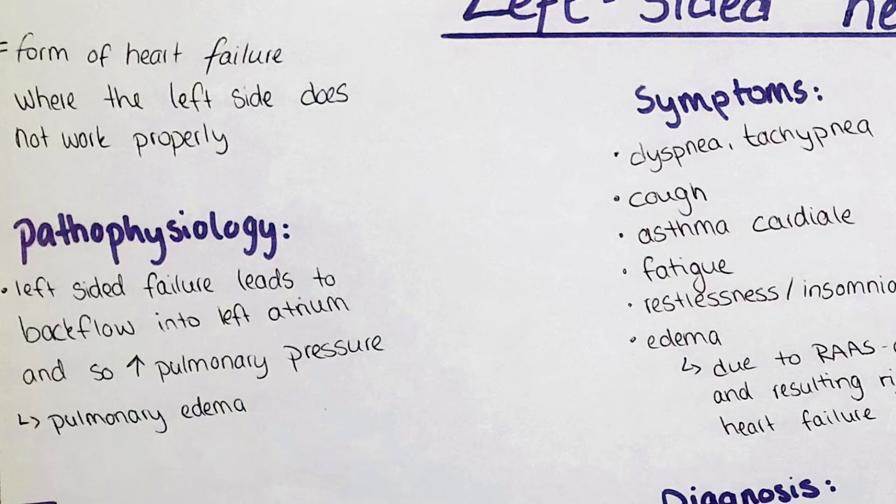We might see hypertrophy and dilatation of the left ventricle, and sometimes the ictus cordis or apical impulse will be displaced and felt more to the left.